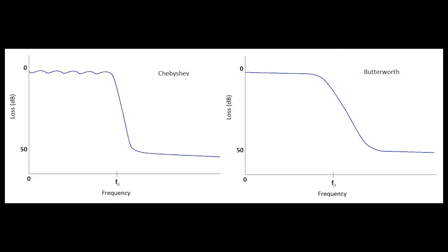One of the tradeoffs is that the Butterworth will have a transition at F-naught over a wider range of frequencies, so you do not get that crisp cutoff as you do with the Chebyshev transfer function. The elliptical transfer function is not shown here, but it's very similar to the Chebyshev in that there's ripple in the pass band, and with the elliptical, there's also ripple in the stop band.